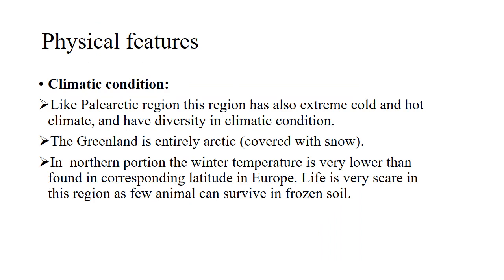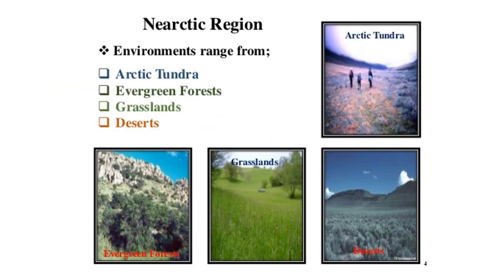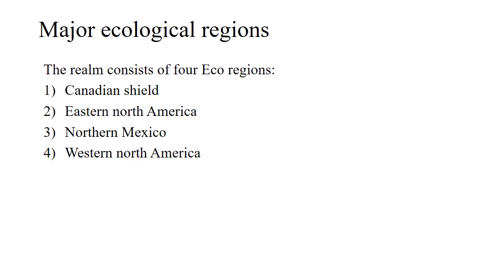Next is the physical feature of the region. Like the Palearctic region, this region also has extreme cold and hot climates and great diversity in climatic conditions. Greenland is entirely Arctic. In the northern portion, winter temperatures are much lower than those found at the corresponding latitude in Europe. Life is very scarce in this region as few animals can survive in the frozen soil. The different habitats range from Arctic tundra, boreal forests, grasslands, and deserts.